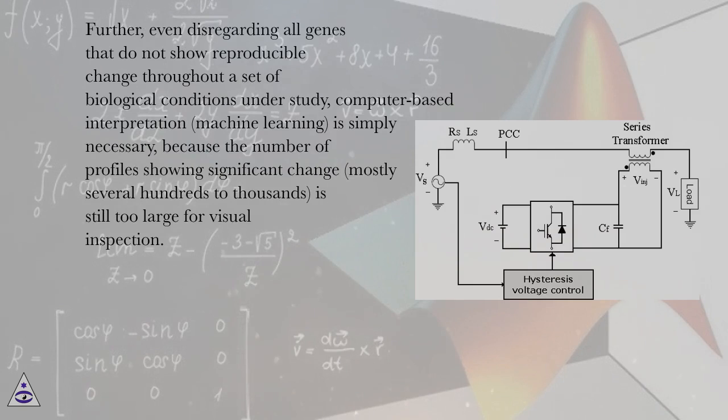Even disregarding all genes that do not show reproducible change throughout a set of biological conditions under study, computer-based interpretation, machine learning, is simply necessary, because the number of profiles showing significant change, mostly several hundreds to thousands, is still too large for visual inspection.